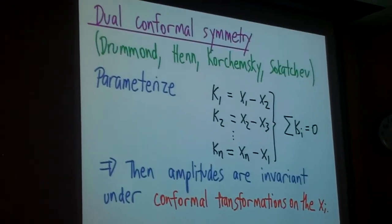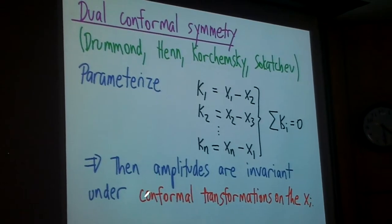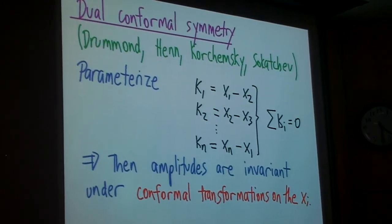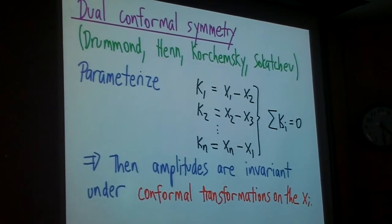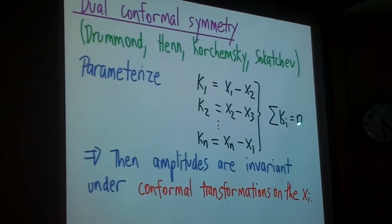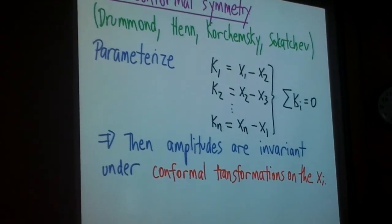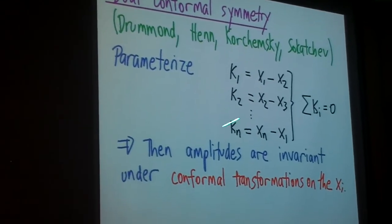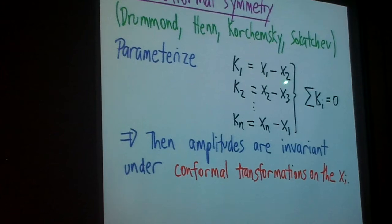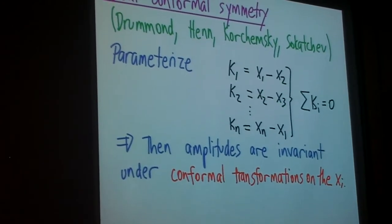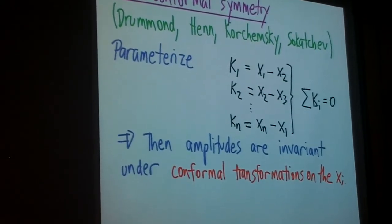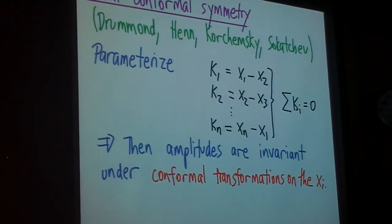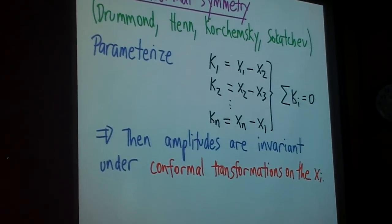So here's what dual conformal symmetry is. Say you've got your N gluons that you're scattering, and they have N 4-momenta K. Of course, by momentum conservation, they all have to sum to zero. Let's solve that constraint by parametrizing the Ks in terms of what I'm going to call dual variables, where I express K1 as X1 minus X2, K2 is X2 minus X3, etc. So here's a transformation between the N Ks and N Xs, which has the nice feature of making momentum conservation manifest.